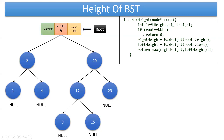Now we will look at the recursive code. What we are going to do is calculate the height of the left subtree and the height of the right subtree. Then we take the maximum of those two heights, add 1, and return that as the height of the whole tree. We have declared two variables, left_height and right_height, to store the heights of the left and right subtrees respectively. If root equals null — meaning the tree is empty — we return height as zero.